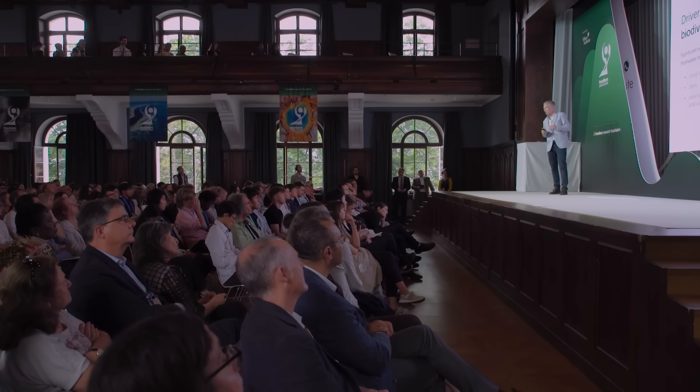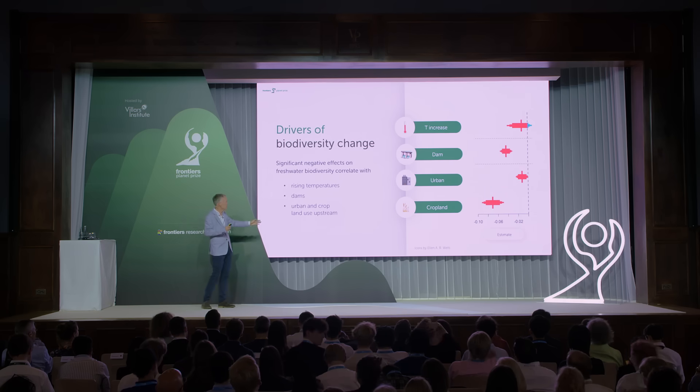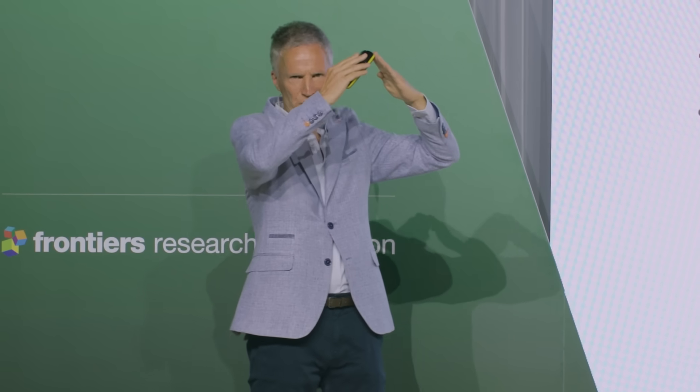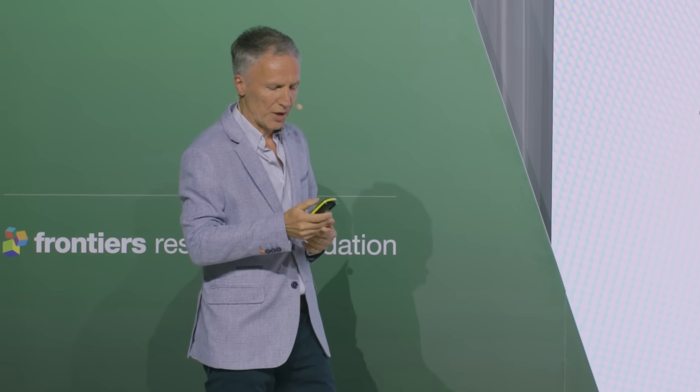To answer our second question, we addressed a broad range of drivers. Here are four examples: temperature increase, the number of dams, urban area, and cropland area in the catchments. Indicated by the red color, you can clearly see there is an inverse relationship between the increase in temperature and the decline in biodiversity. If you get more dams over time, you get fewer species over time. The same applies to more urban area and more cropland area — less species over time. These are four important negative drivers influencing freshwater biodiversity.